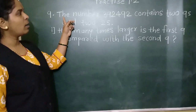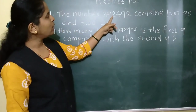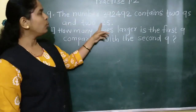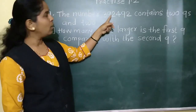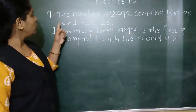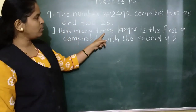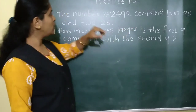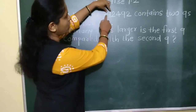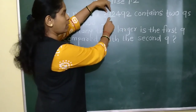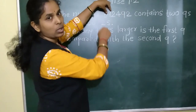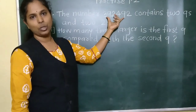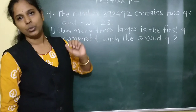Question number 9: the number 3,92,492 contains two 9s and two 2s. The first question based on this is: how many times larger is the first 9 compared with the second 9? Look at this 9 and this 9 — this is the first 9 and this is the second 9. By how many times is this first 9 larger than the second? For that, we will write the place values of these digits and then do subtraction.